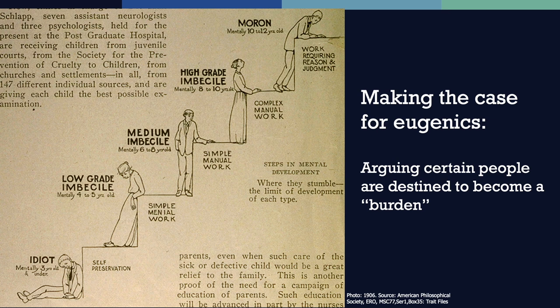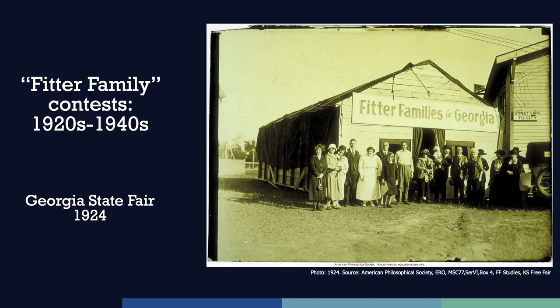Despite many scientists' skepticism and outright rejection, some people began defining different levels of intelligence through the use of specific tests. It was around this time that IQ tests were created. This illustration shows how people were categorized by the mental age that eugenicists believed they would reach and the type of work eugenicists believed they would be able to perform. Part of the goal of eugenicists was to show that genetically inferior people would become a burden to society. Intelligence is a complex trait that is still not well understood. The early IQ tests — and some would argue even modern IQ tests — do not account for environmental, cultural, or social factors that may impact performance. Poor performance on an IQ test in the early 20th century could result in a person being institutionalized or sterilized for feeble-mindedness.